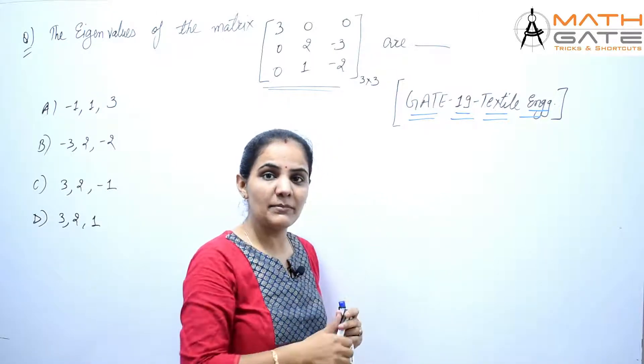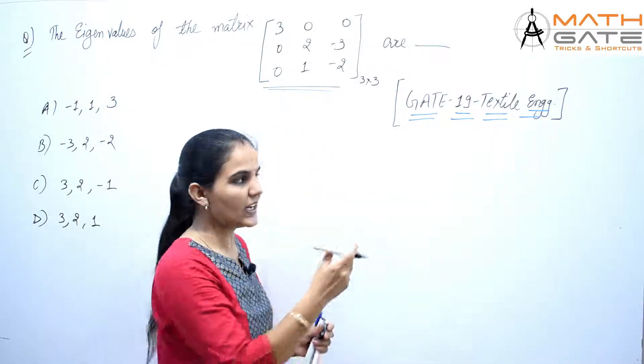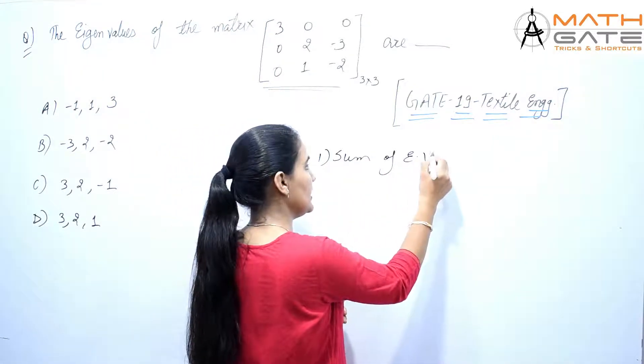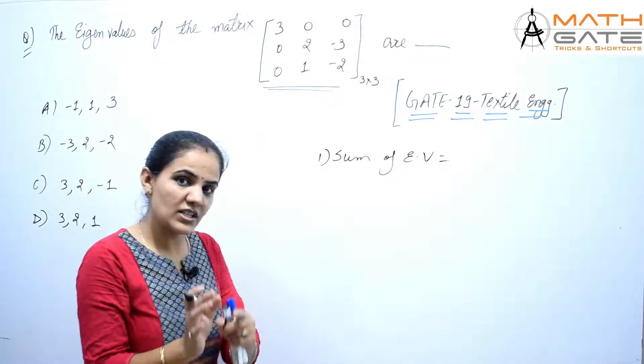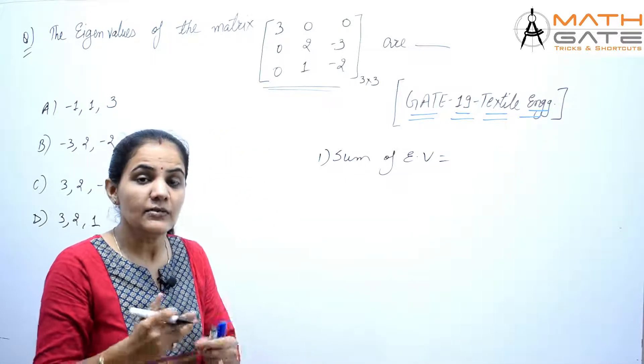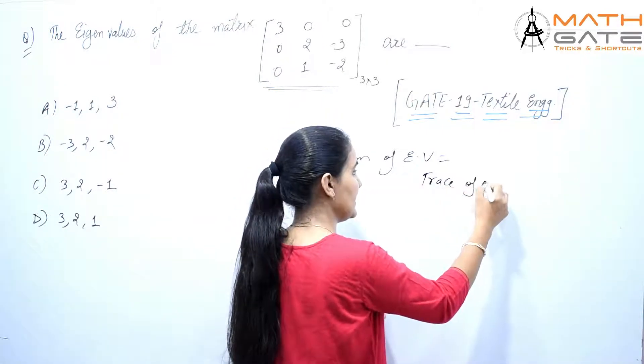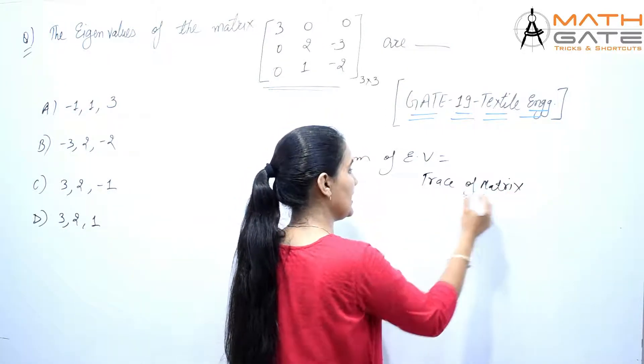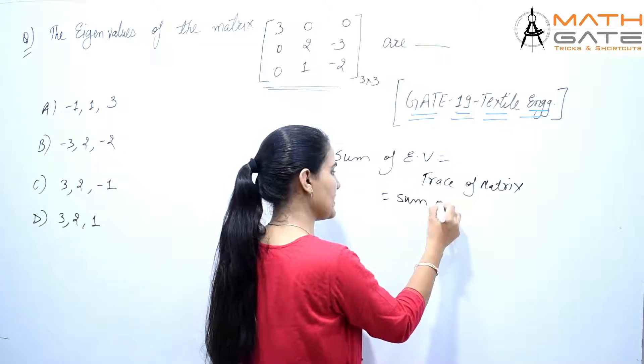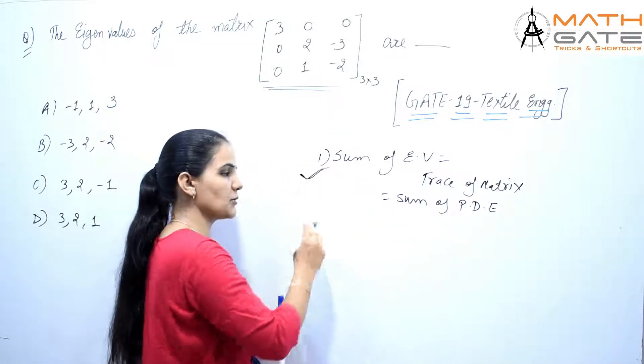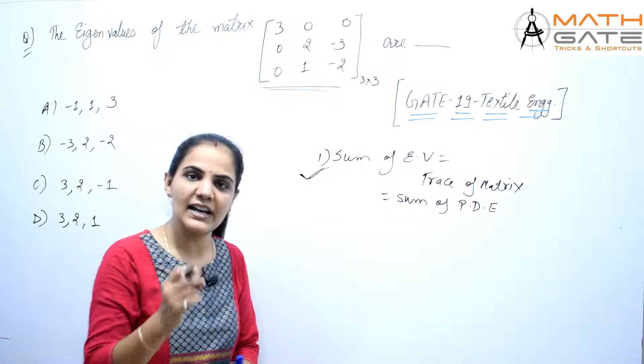First, you will find the sum of eigenvalues from the given matrix. Sum of eigenvalues means trace - trace of matrix, which is the sum of principal diagonal elements.